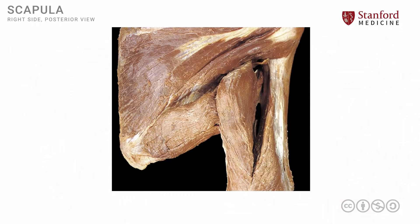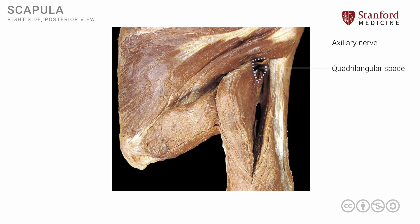Let's now look at a simple photograph of a dissection to highlight these structures. You'll note the quadrangular space, which is clearly seen here — it is the site for exit of the axillary nerve. There is a muscle on the medial part of that quadrangular space, and as we have seen previously, this is in fact the long head of the triceps. It is quite a substantial muscle, and it forms one of the boundaries of the quadrangular space.